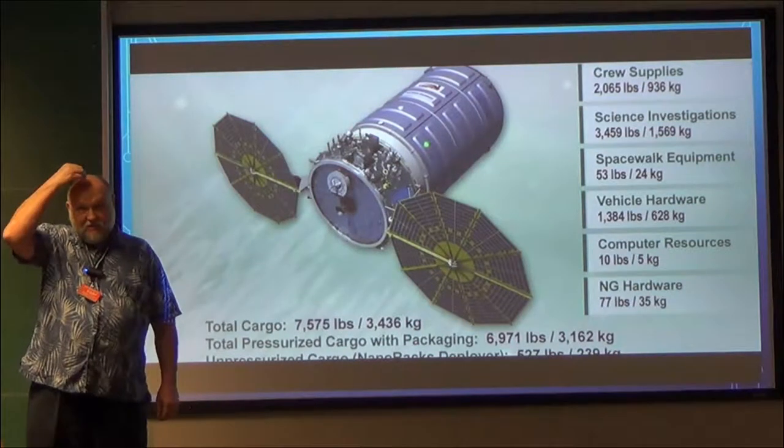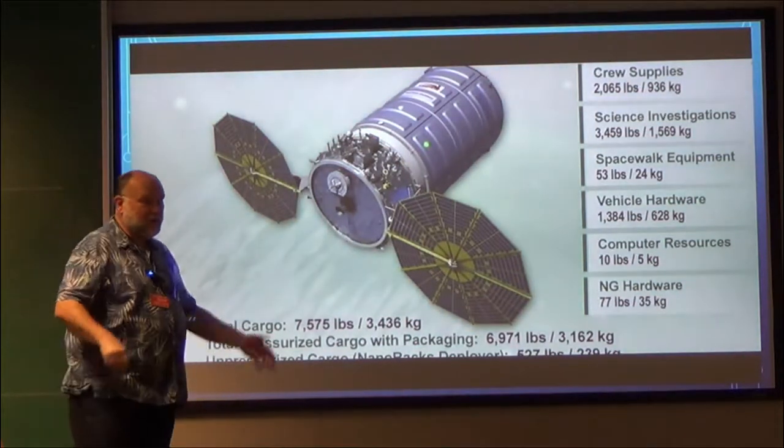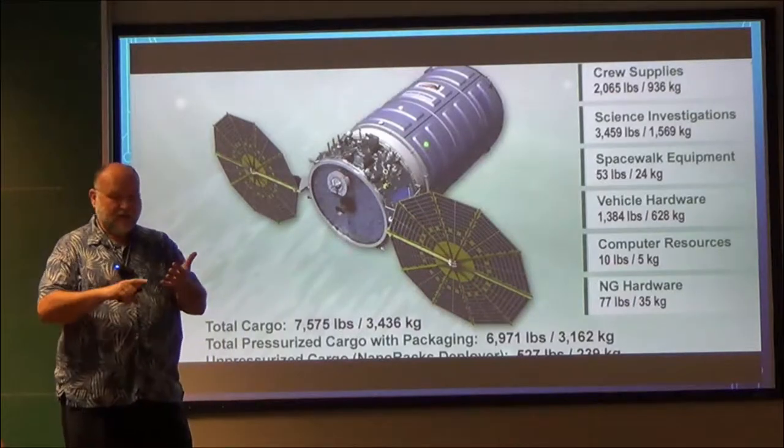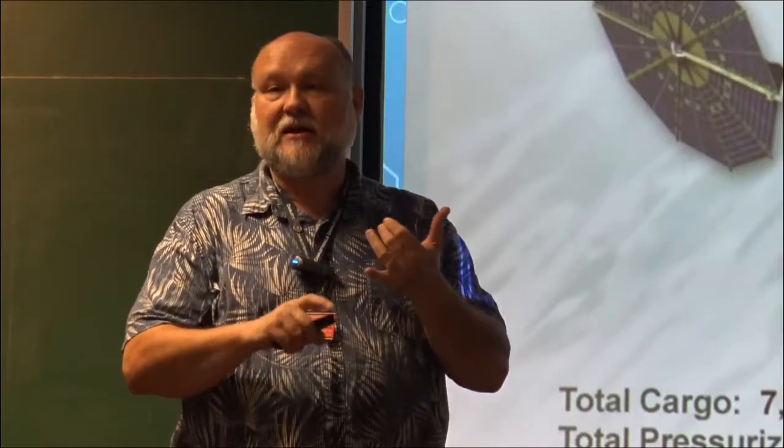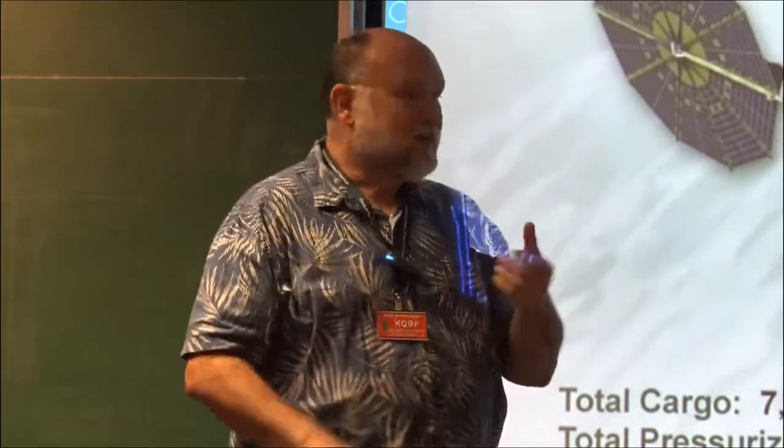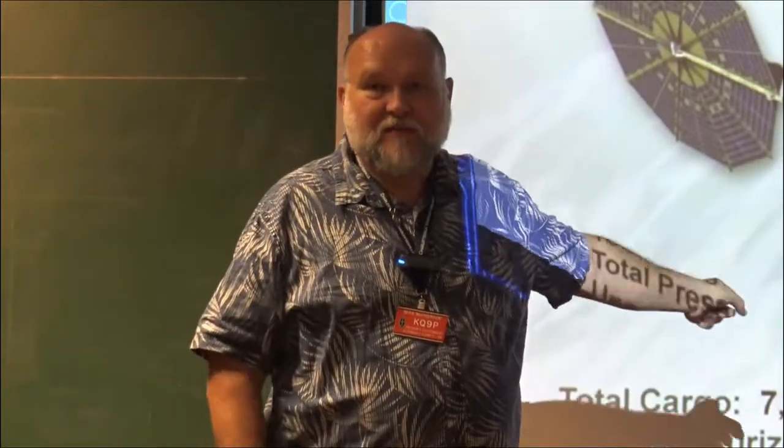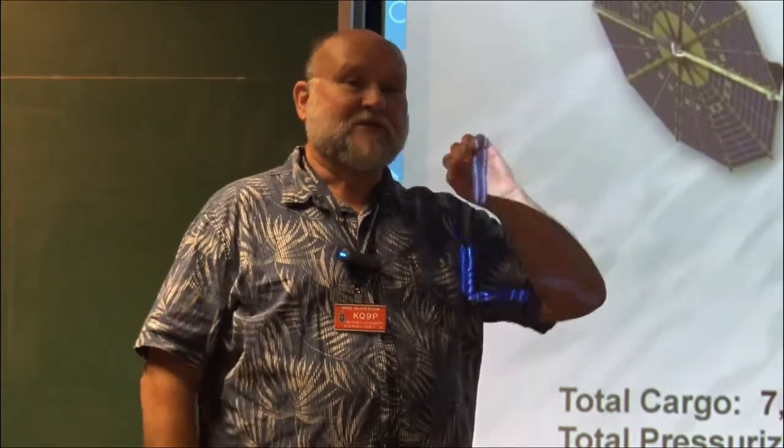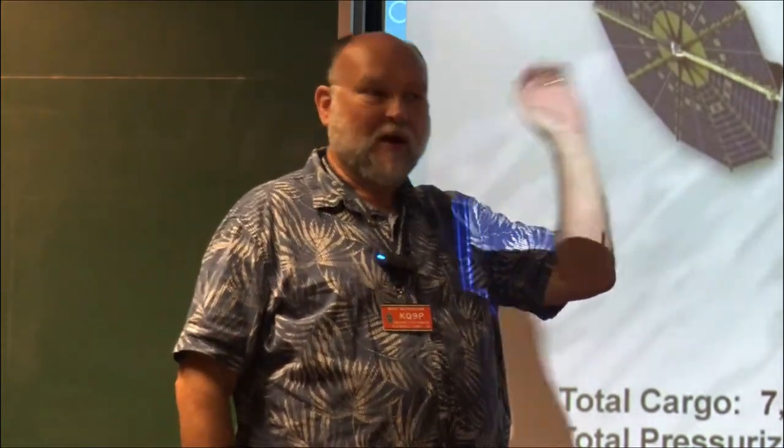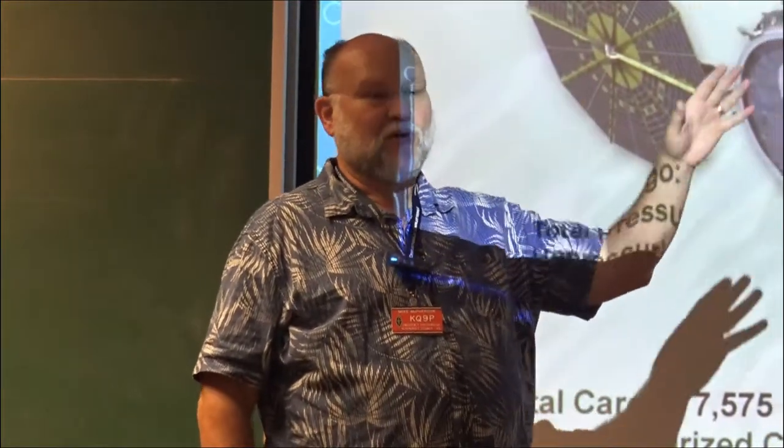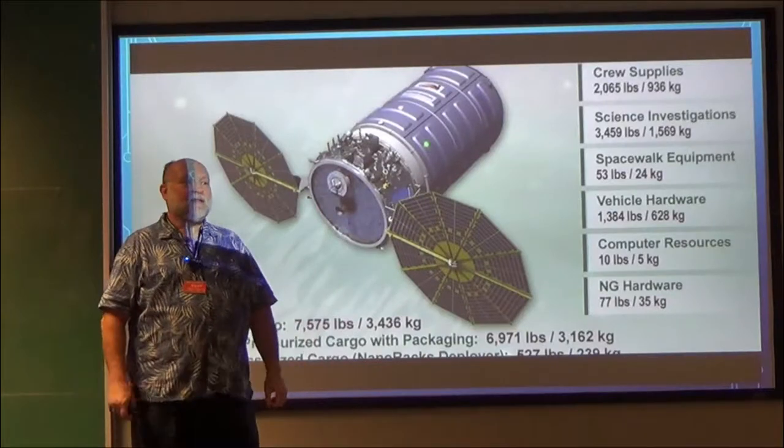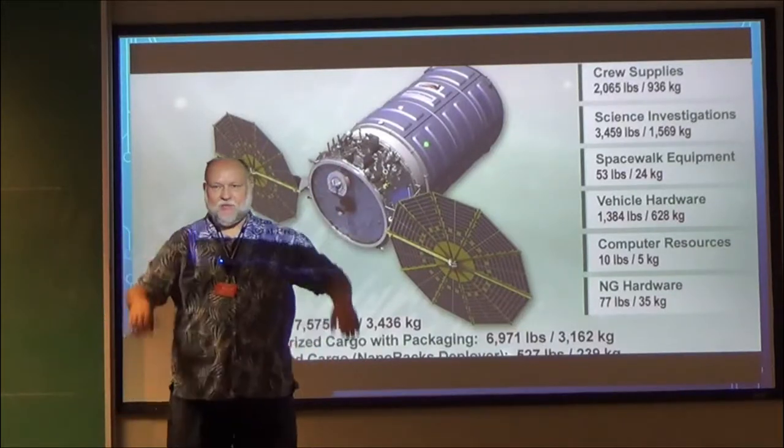And then we launched. Typically there are two ways to get to space if you have a CubeSat. One way is direct deployment from the launch vehicle. They basically tuck one or more of these dispensers into the nooks and crannies on the booster stages, typically the second stage.